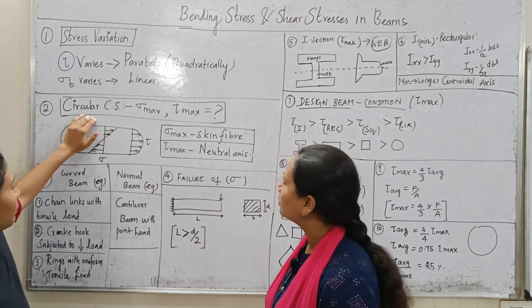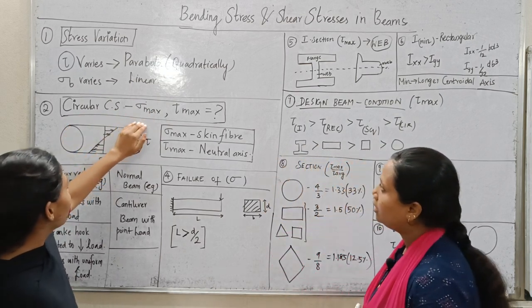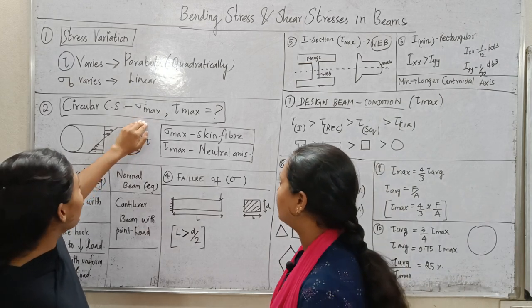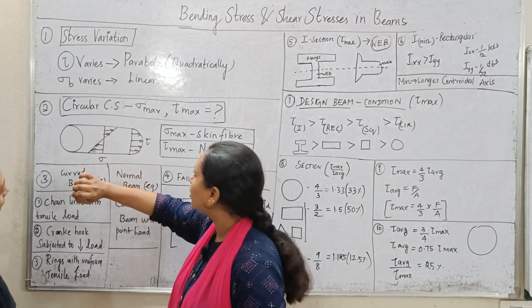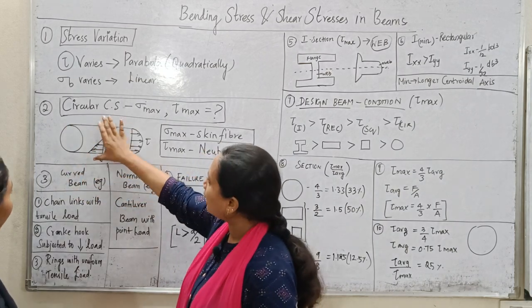Next one is a circular cross section beam. Maximum bending stress and maximum shear stress is the same. When you go to a circular cross section, here is a circular cross section.